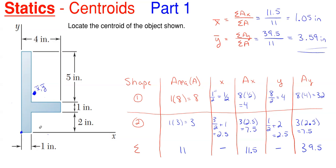Does it make sense that the centroid is located there? Yes, because this vertical piece is so tall that it drags the centroid upward, and this horizontal piece drags it to the right. With the vertical portion being much taller than the horizontal portion is wide, you would expect the Y value to be much higher than the X value based on the dimensions shown.